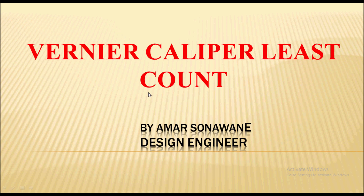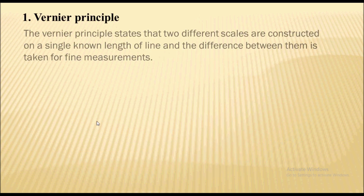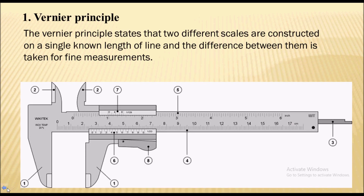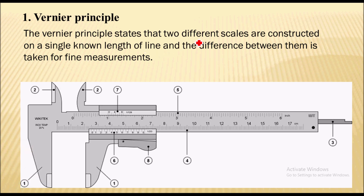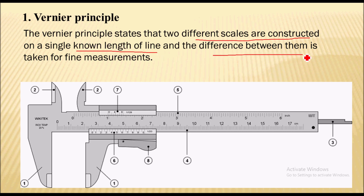So let's go to the vernier caliper principle. The principle states that two different scales are constructed on a single known length of a line. In vernier caliper there are two scales constructed on a single known length of a line, and there is a difference between them that is taken for the fine measurement.